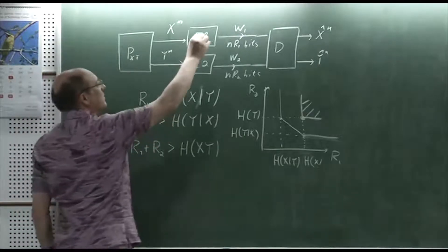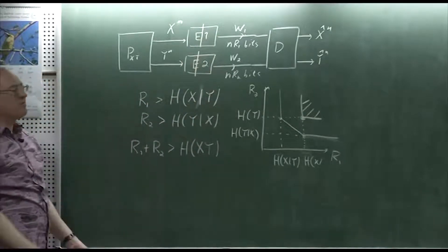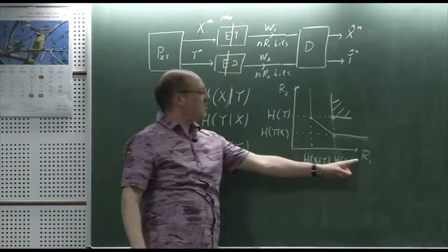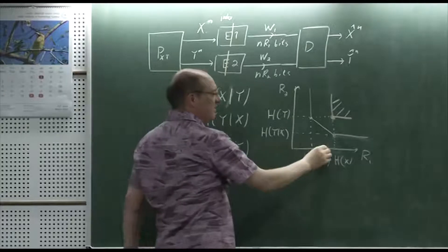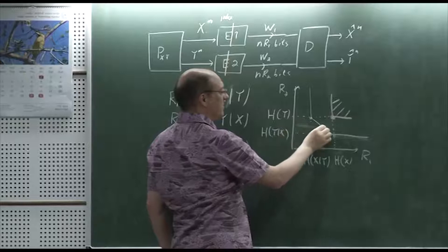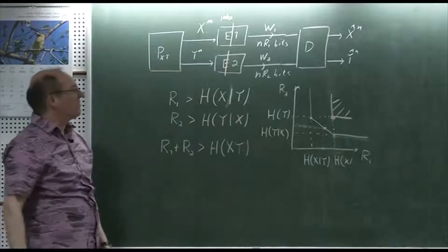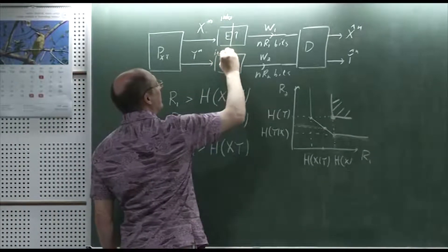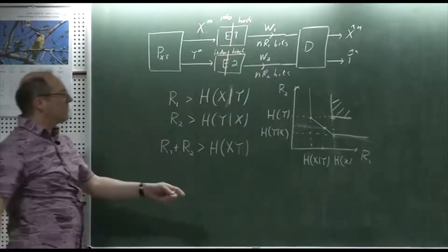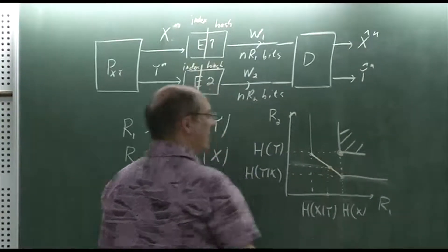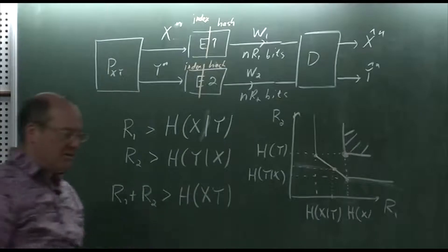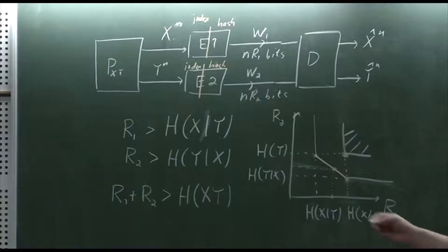The encoding is effectively separation-based: first we index the typical sequences to compress down to H(X) bits, and then compress further using hashing. As long as we choose the compression rates appropriately, we can approach points on the boundary of that rate region. So we have indexing first, then hashing. If the decoder uses a good decoder to undo this, we can approach any point on the boundary.